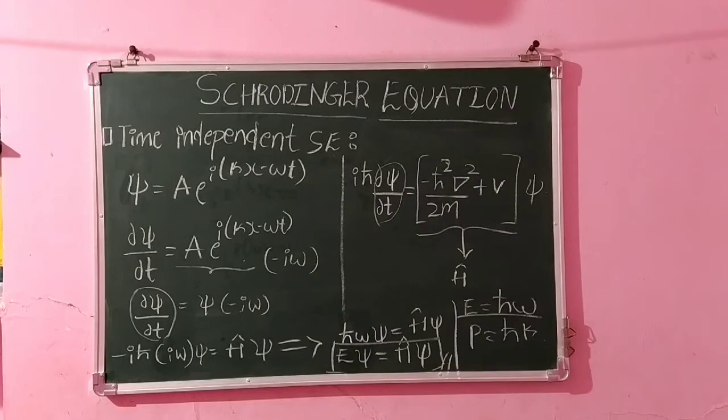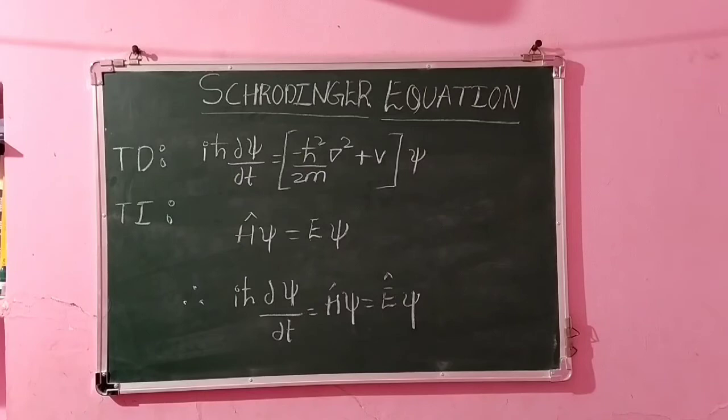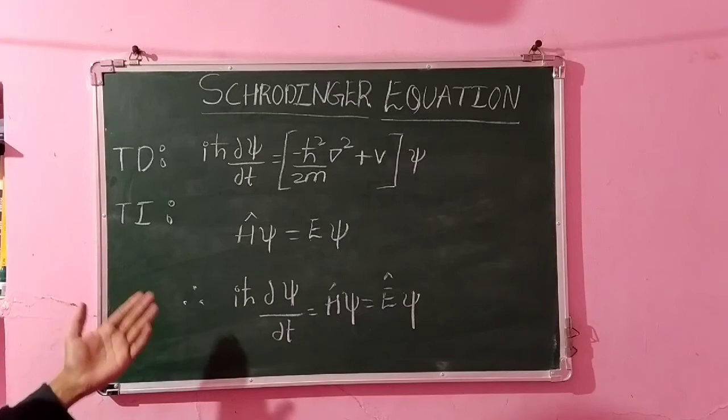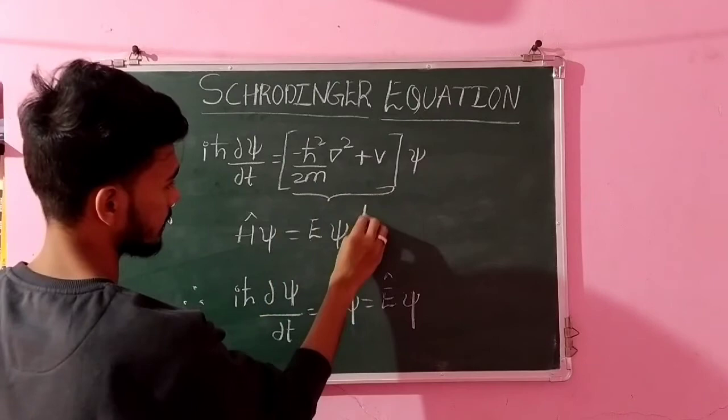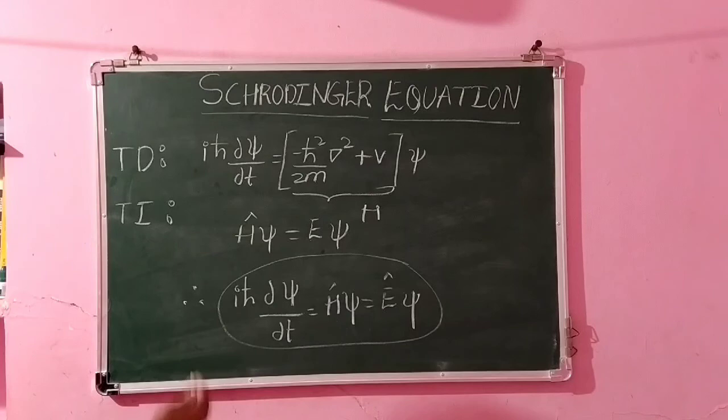Therefore, finally we can conclude that the time-dependent Schrödinger wave equation is given by iℏ∂ψ/∂t equals H cap psi, which equals E psi.